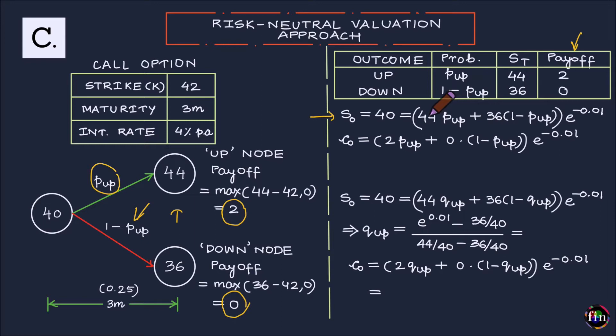Essentially, this equation reads something like this. 40, the current price of my stock is equal to the expected value of my future stock price, 44 times P-up plus 36 times 1-P-up.